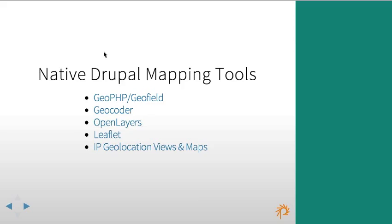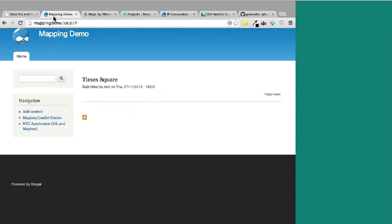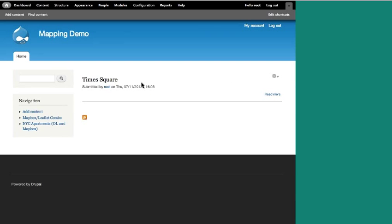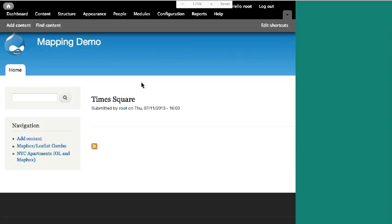IP Geolocation Views and Maps does a couple dozen really awesome things that are individually not great, but taken as a package it's really the kitchen sink. I'm going to show a couple of things with the Drupal mapping modules — feel free to stop and ask if something doesn't make sense.